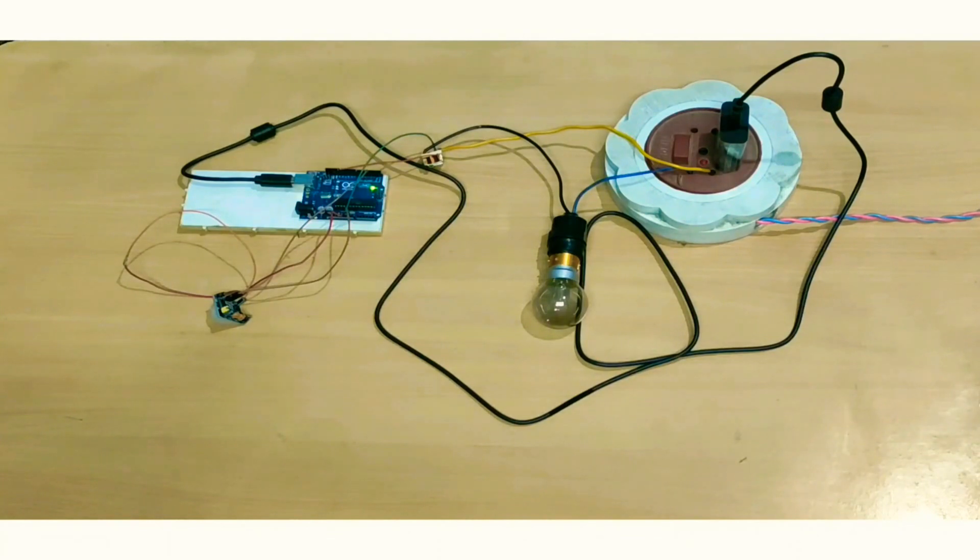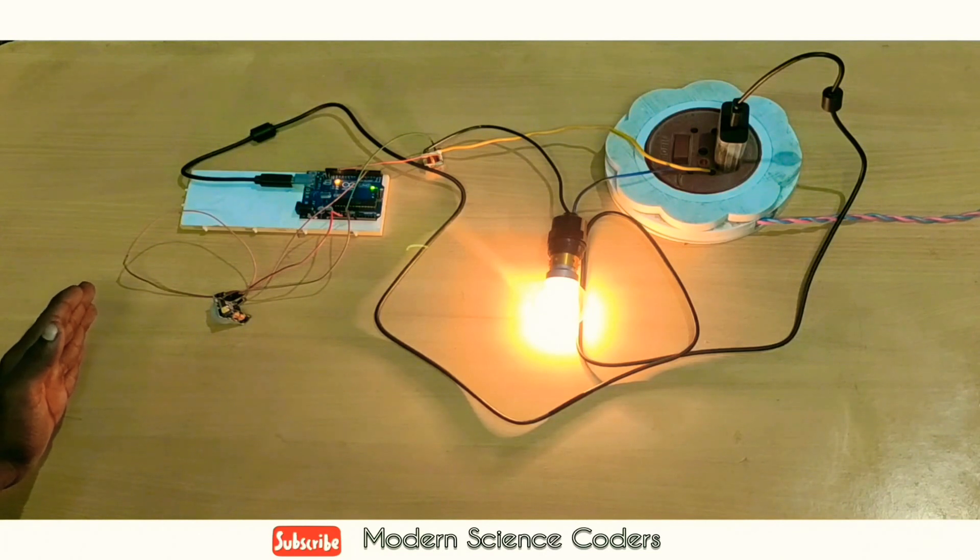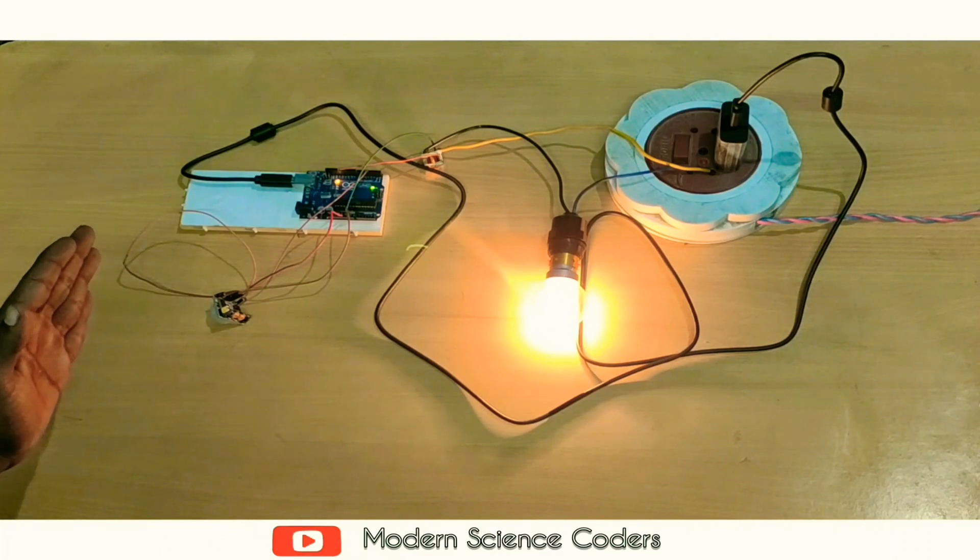Testing now. Actually, if you move your hand in front of the PIR sensor, the LED will light up. Right now the LED is off. When there's movement, the safety LED will turn on. Let's see. Wow, it's a perfect one.